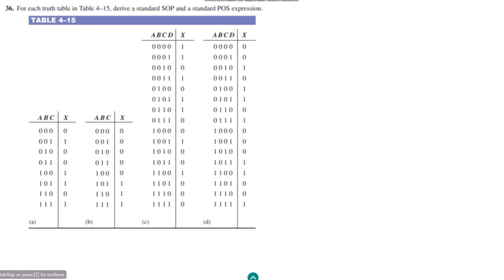Welcome back. This is question 36 and today we are going to talk about part C. In part C we have four variables: a, b, c, d. The domain for it is {a, b, c, d}. In order to find the Sum of Products (SOP), we have to identify all the terms for a, b, c, d for which the output is one.